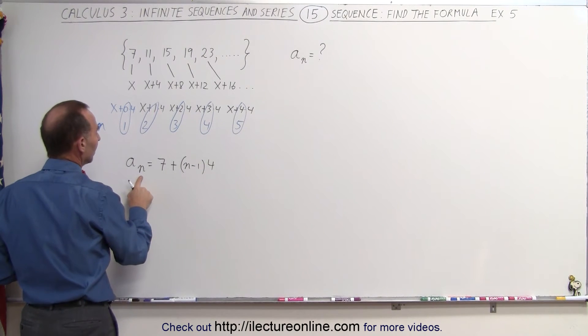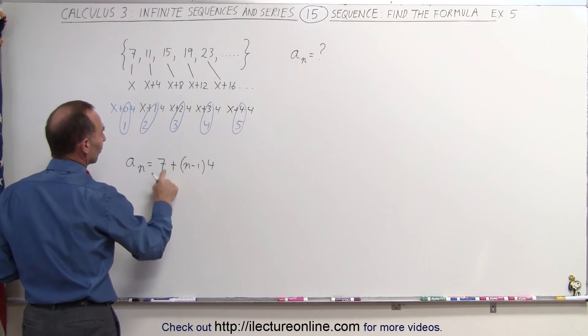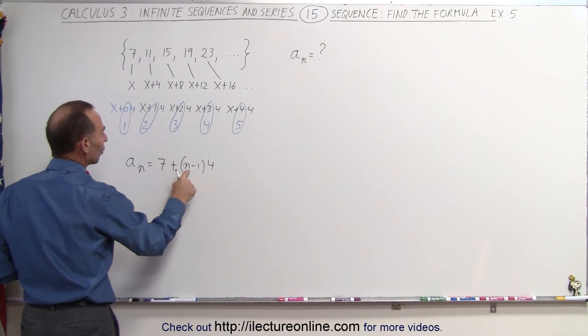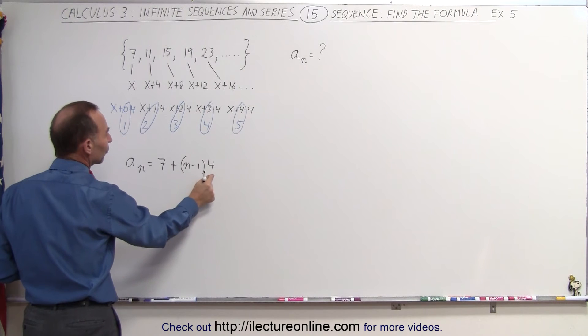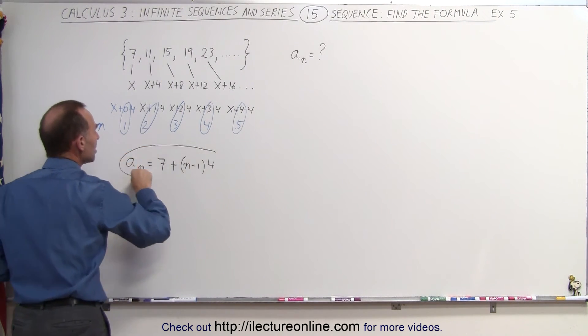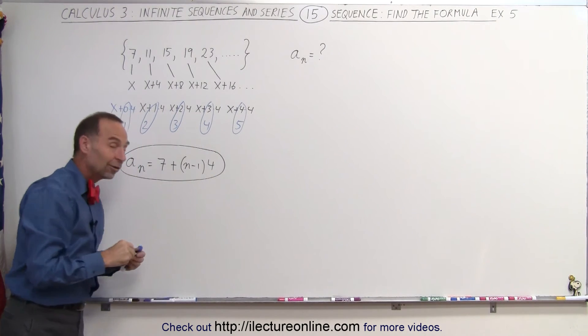So when n is equal to 1, 1 minus 1 is 0, we get 7. When n is equal to 2, we get 7 plus 2 minus 1, which is 1 times 4, which is 7 plus 4, is 11, and so forth. And that gives us the sequence in totality.